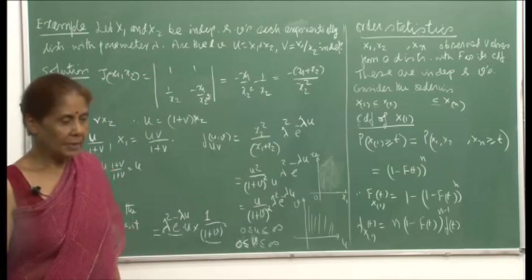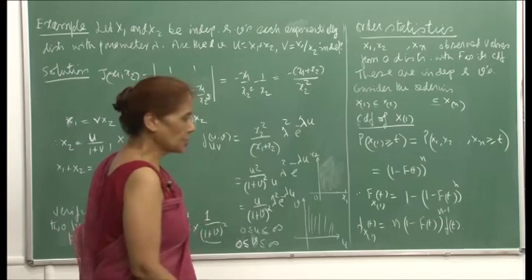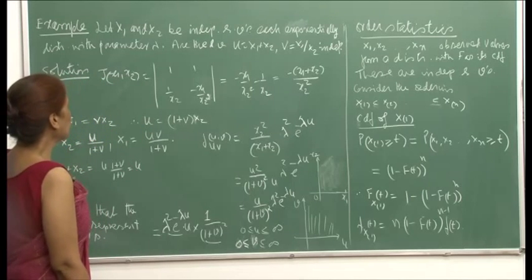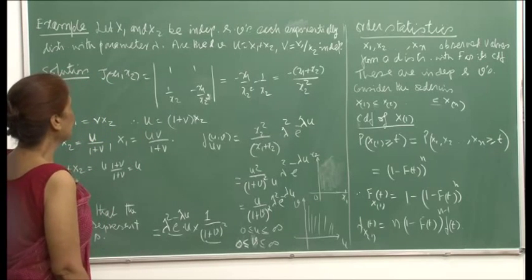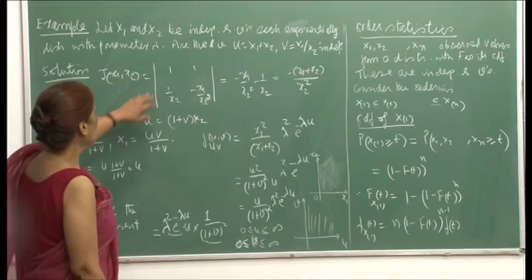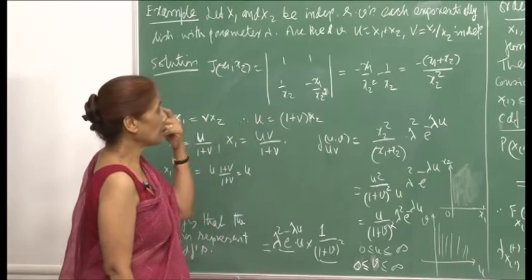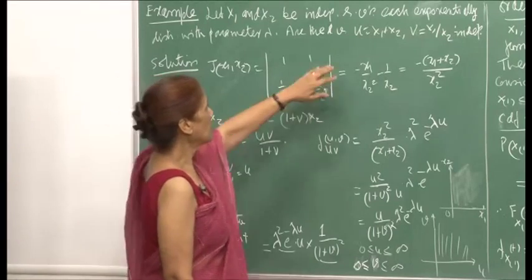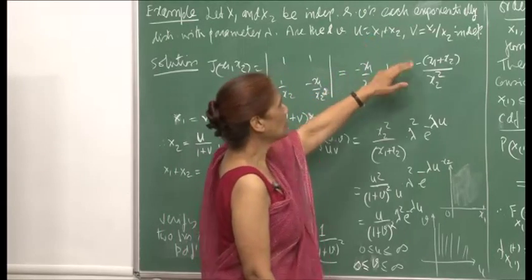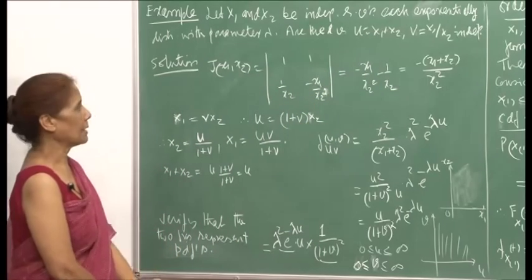Let me continue with another example of functions of random variables. Here X₁ and X₂ are independent random variables, each exponentially distributed with parameter λ. The question is: are U = X₁+X₂ and V = X₁/X₂ independent?